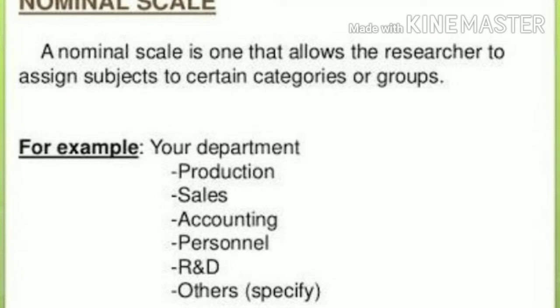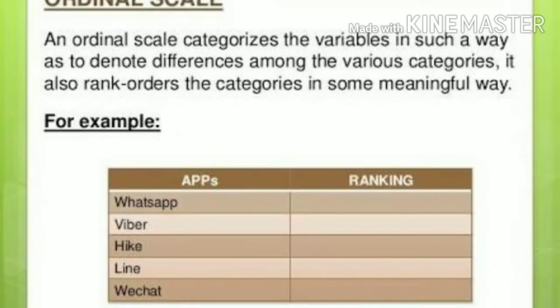The next one is ordinal scale, which is used for variables which can be categorized as well as ranked — that is, where one choice is superior to another. This can be ranked on the basis of their level. It is usually used to measure non-numerical or qualitative concepts like happiness, sadness, satisfaction, level of pain, and so on.